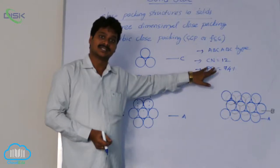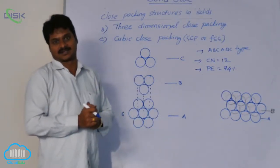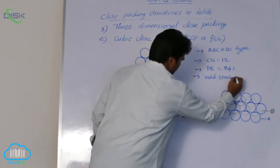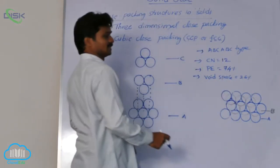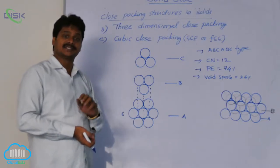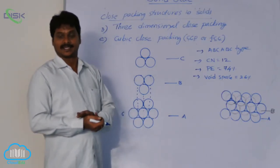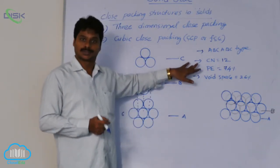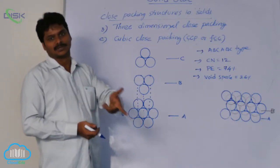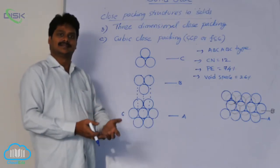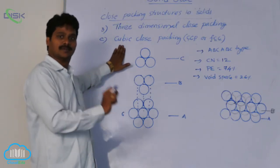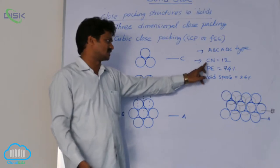Packing efficiency — its derivation and calculation was shown in the last class, so here also packing efficiency is 74% and void space or empty space remaining is 26%. In HCP and CCP, coordination number and packing efficiency are the same. Whereas in simple cubic geometry, packing efficiency is only 52.4%. That means it is much lesser, which is why solids do not adopt simple cubic geometry — their occupied volume is very low. CCP and HCP are the most common geometry for solids because of their higher packing efficiency and higher coordination number.